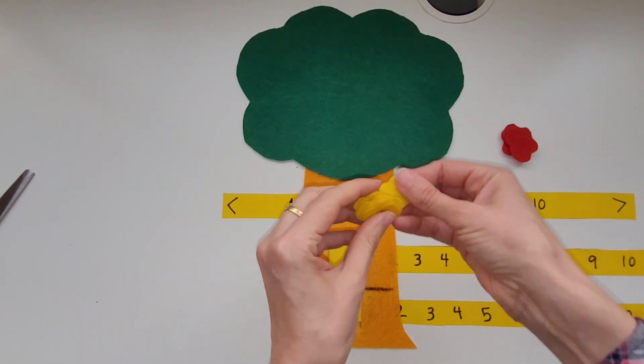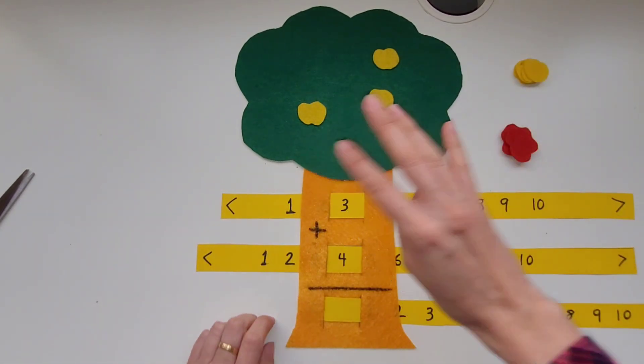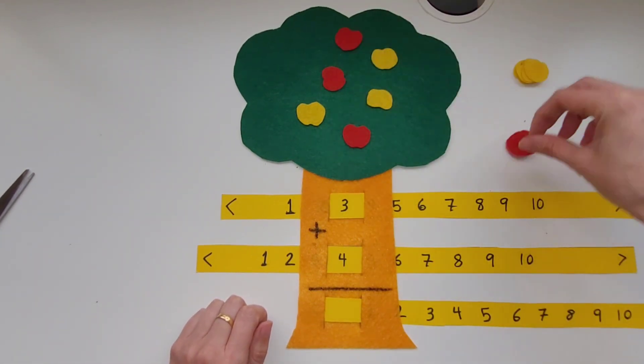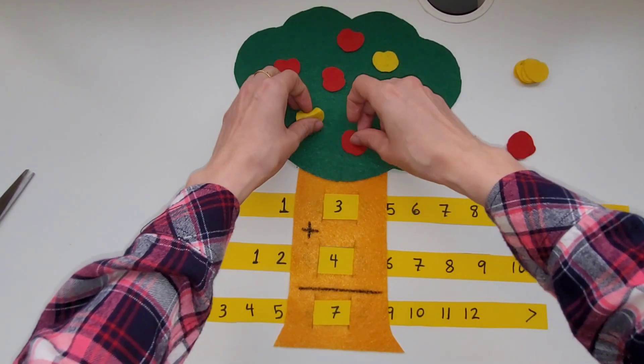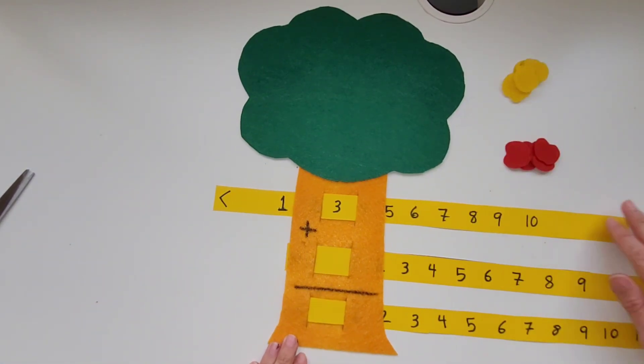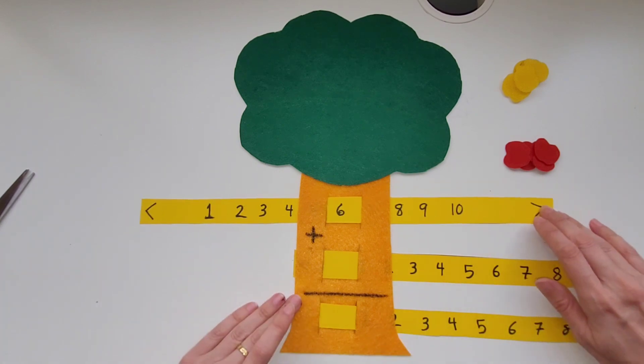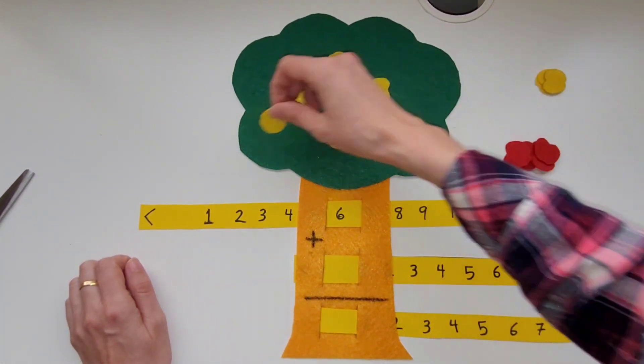Now that we've written all the numbers we are ready to get started with the activity. We're going to pull the first tab until we reach a number. Then we're going to put that number of apples on the tree. We're going to pull the next one until we get another number and then we're going to add that number of apples onto the tree. We're going to add the numbers together and then we will have the answer to our addition problem.